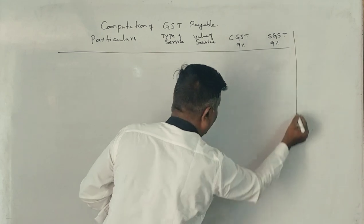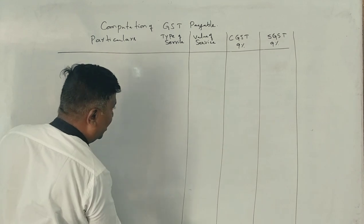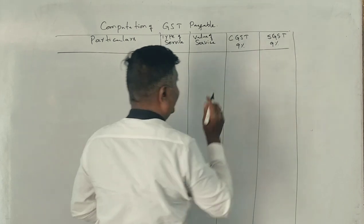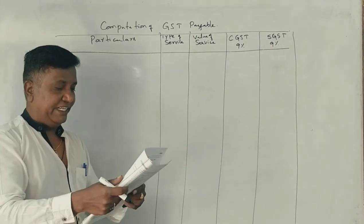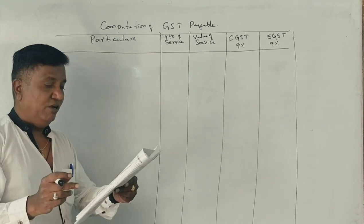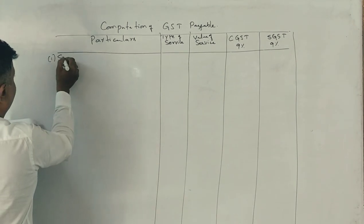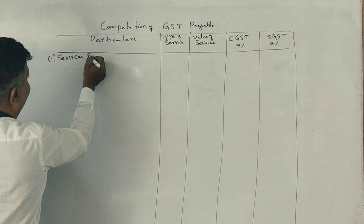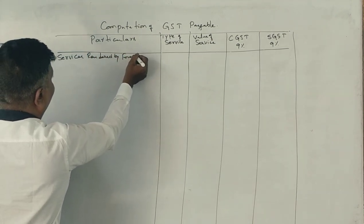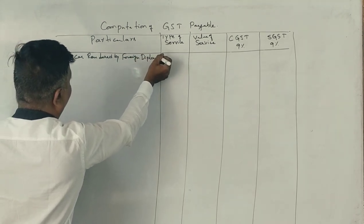These are the rules. The first point is services provided by foreign diplomatic missions. Services rendered by foreign diplomatic missions are exempt from GST.